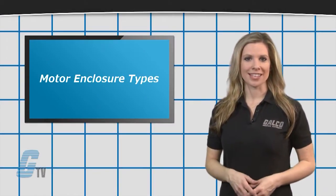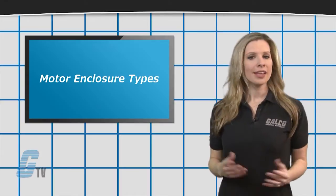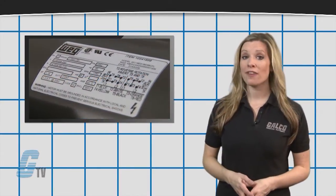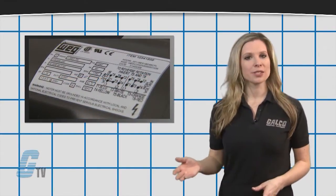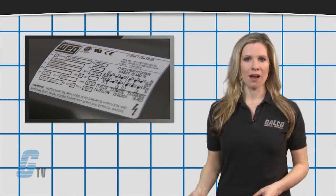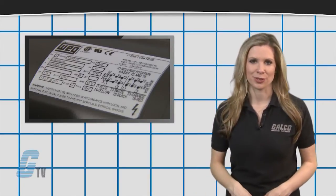The enclosure type of a three phase AC induction motor is found on the nameplate and can affect performance as well as protect the inner mechanical parts from environmental hazards.